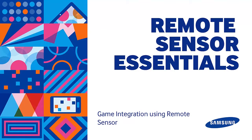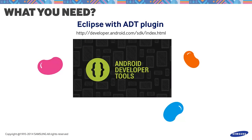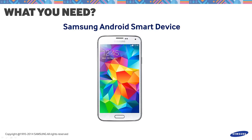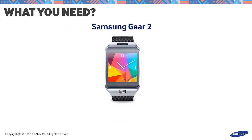We'll start off by gathering all the things we need to develop a remote sensor application with Gear. Make sure to have Eclipse with Android development tools installed, and make sure to have updated to the Jellybean packages. Jellybean is the minimum requirement to use the Samsung remote sensor. We will need the following jar files, which can be found in the mobile SDK 1.5 archive file. Also make sure to have an Android smart device with Jellybean OS and a Samsung Gear 2.